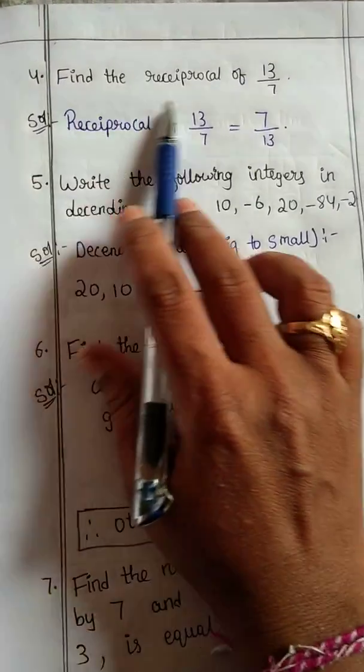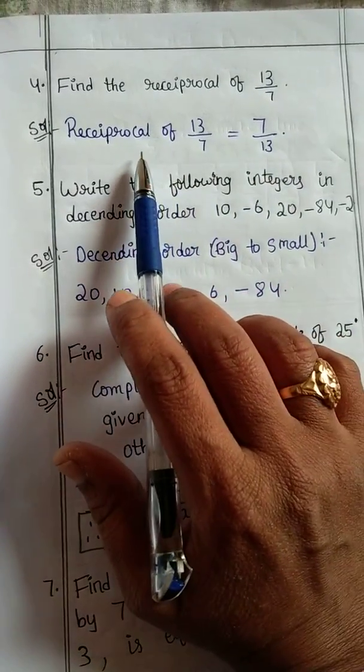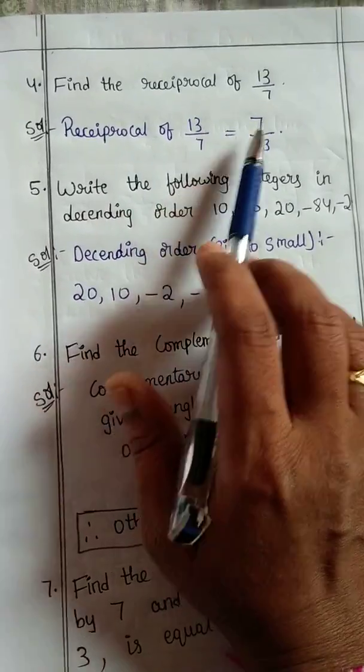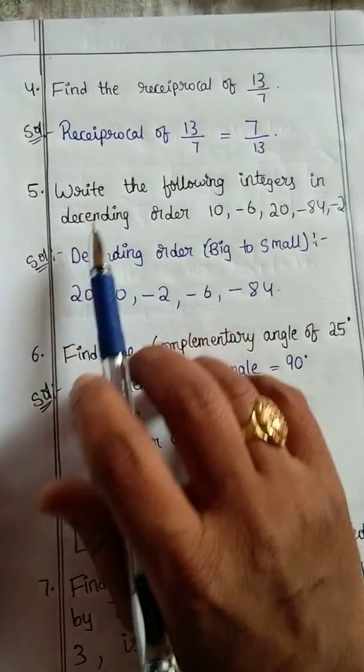Next, fourth question: find the reciprocal of 13 by 7. Very simple. Reciprocal means just we should take the reverse of that number. Reciprocal of 13 by 7 is 7 by 13.